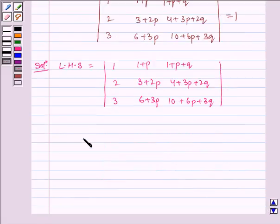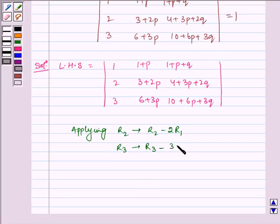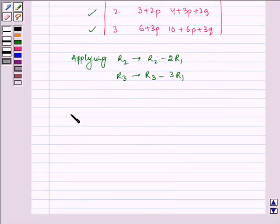Now apply R2 tends to R2 minus twice of R1 and R3 tends to R3 minus twice of R1. Now applying row operation on these two rows, we get which is equal to 1, 1 plus p, 1 plus p plus q, 0, 1, 2 plus p, 0, 3, 7 plus 3p.